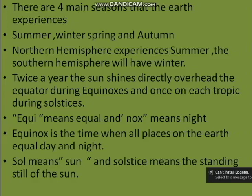What do you mean by equinox? 'Equi' means equal and 'nox' means night. Equinox is the time when all places on the earth have equal day and night. Solstice means the standing still of the sun.